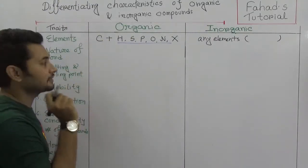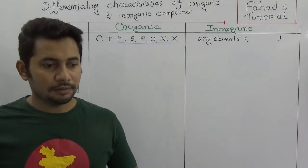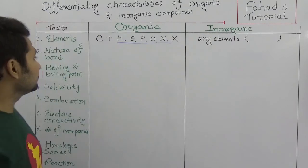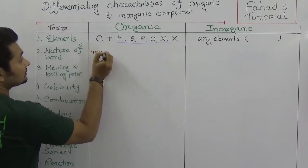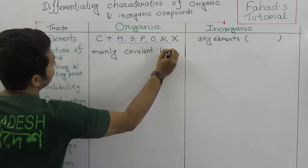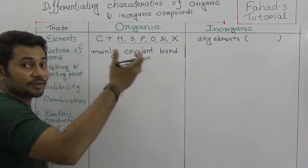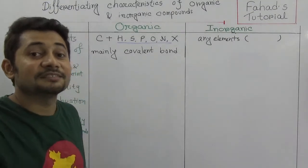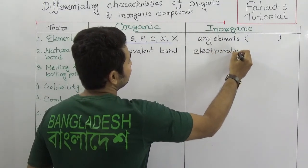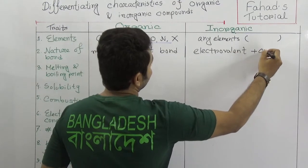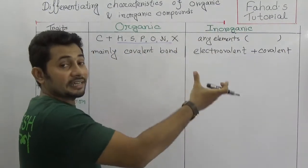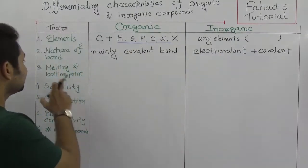Number two is the nature of bond. Organic compounds are mainly made up of covalent bonds. Carbon is connected with other carbons or hydrogens through covalent bonds. But in inorganic compounds both can happen — it can be an electrovalent bond or a covalent bond. So in inorganic compounds it can be electrovalent (ionic) or covalent.